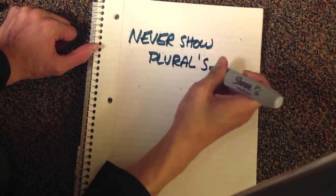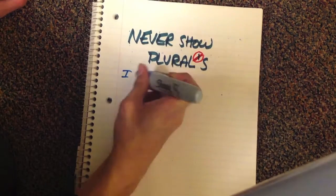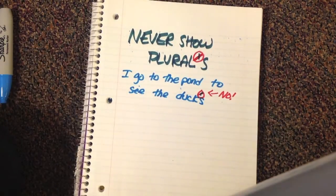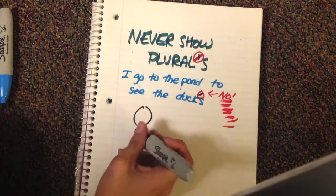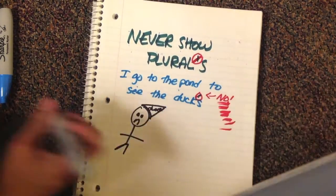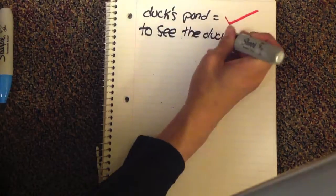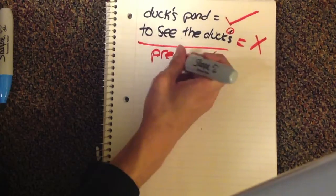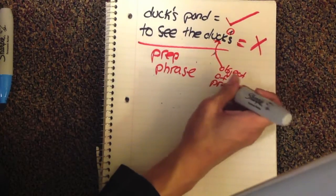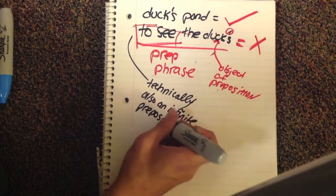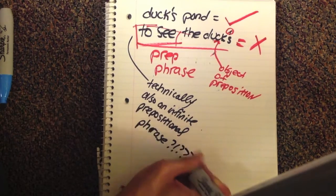Now, third thing. Apostrophes do not show plurals. Huge misconception. They do not show plurals. I go to the pond to see the ducks. There is no apostrophe at the end of ducks. That is just stupid and it makes you look grammatically dumb. You do not use an apostrophe there. There is no rule in the English language where you can use an apostrophe to make a plural. You just add an S to make it plural. Unless something is being owned, you add S or ES. It depends on the word. I'm not going to get into that whole thing. No apostrophe in ducks. The ducks are the object of the preposition. To see the ducks. End of subject.